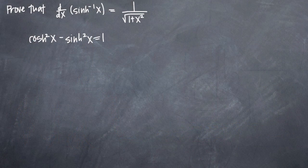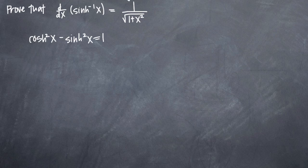In this particular problem, we've been asked to show that the derivative of inverse hyperbolic sine is equal to 1 divided by the square root of 1 plus x squared. Normally this would just be a definition or an identity that would be given and we take it for granted, but in this case we need to prove that this is true.